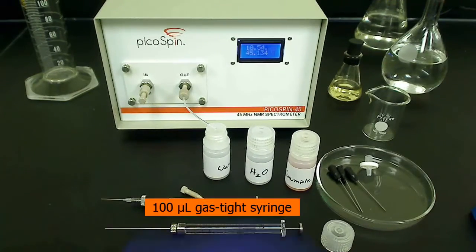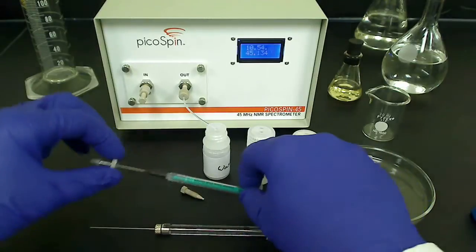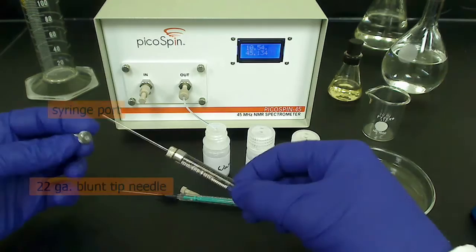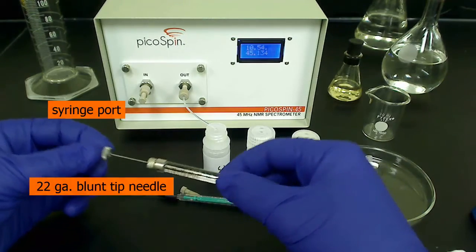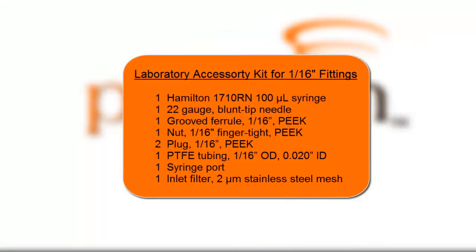You can follow the same procedure of sample injection using an HPLC gas-tight syringe. You would consider switching to a gas-tight syringe for analytical work, or when only a small volume of sample is available. I'm using a Hamilton 1710RN 100 microliter gas-tight syringe fitted with an inch and a half long, small hub, 22 gauge blunt tip needle. These parts can be found in the laboratory accessory kit.